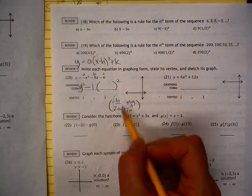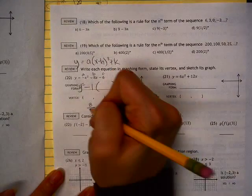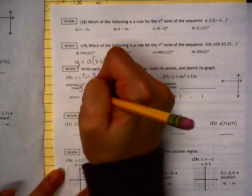So this will give me my h. So I'm having a negative negative 8, which is positive 8, over 2 times negative 1, which is negative 4.